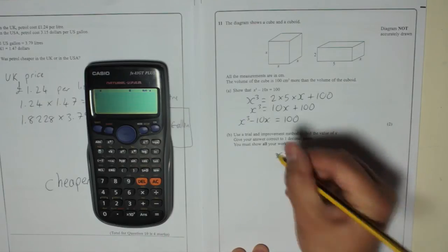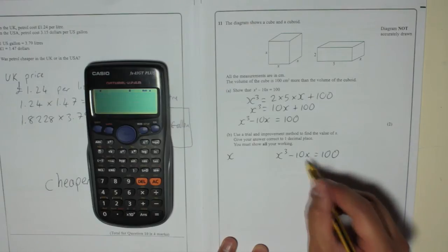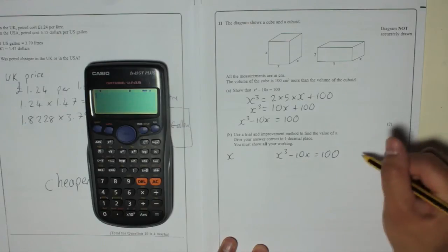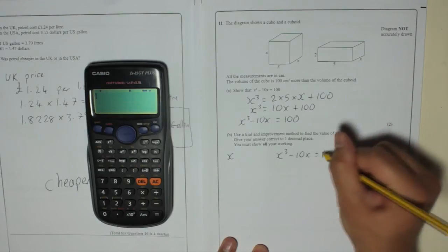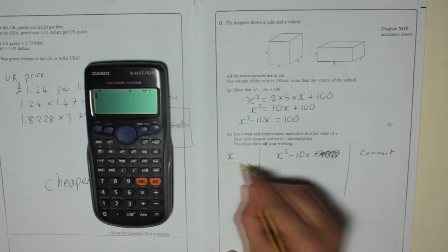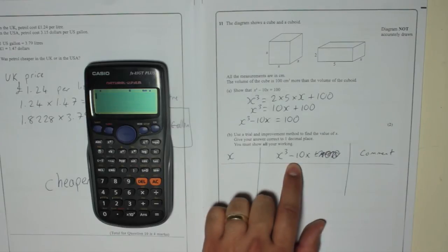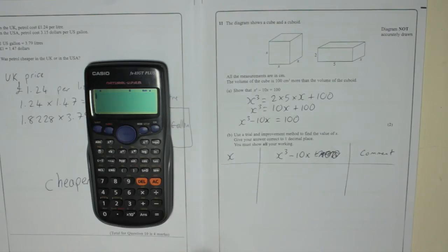So I'm going to try X's. Write down what you get when you do that. And then I'm going to write a comment. I'm going to just cross out the equals 100 part. So you're going to make a table. So we want to get 100, remember. So let's try 10.